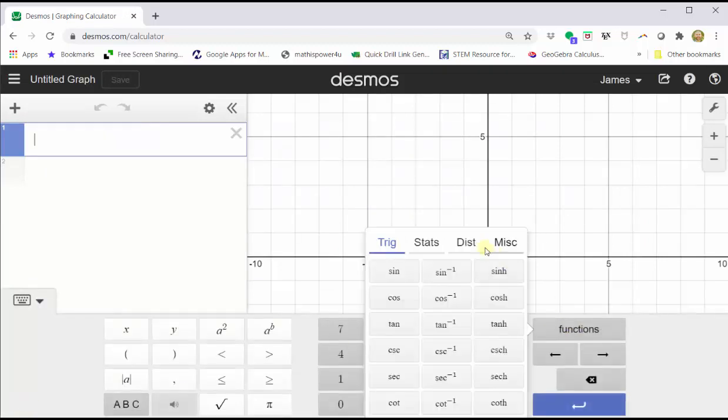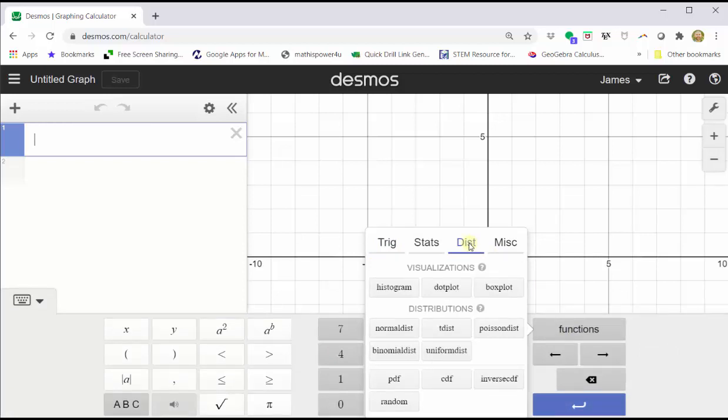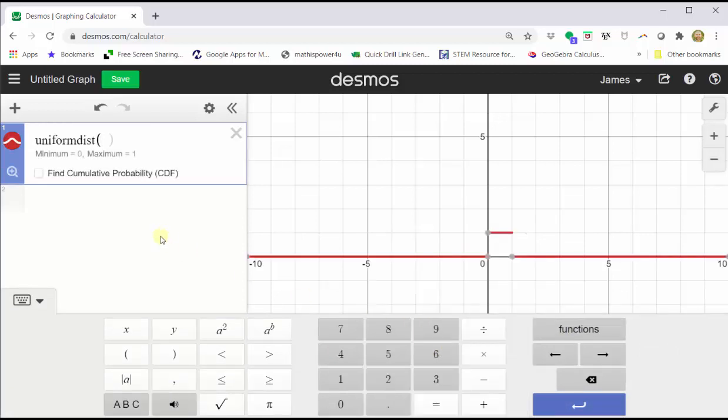Click functions. Click the distributions tab. Click the uniform distribution. Enter the min and max values for x, which in our case would be 1.5 comma 4.